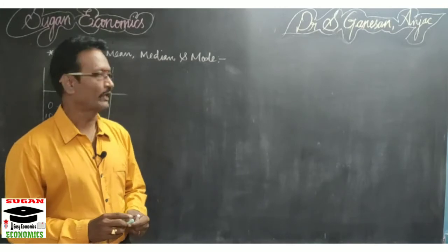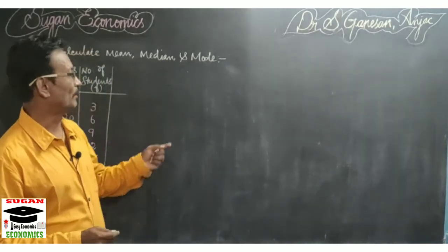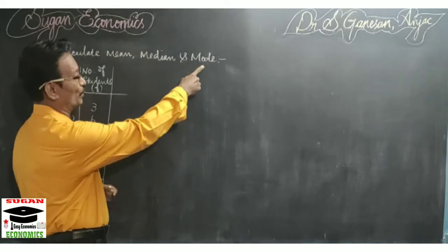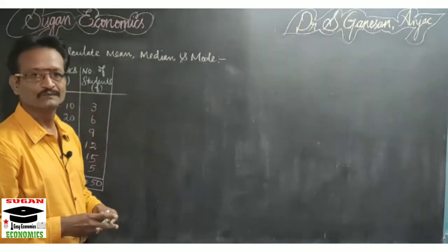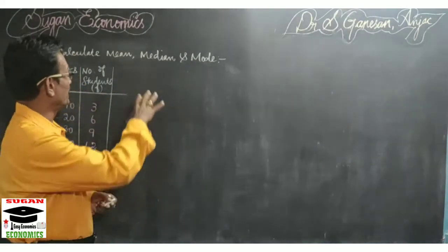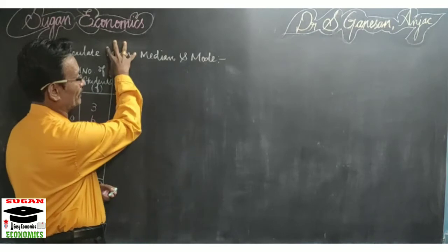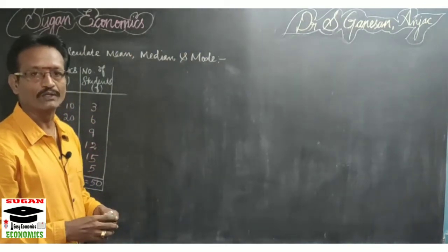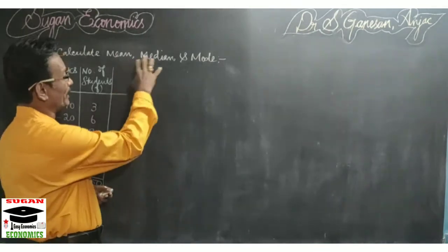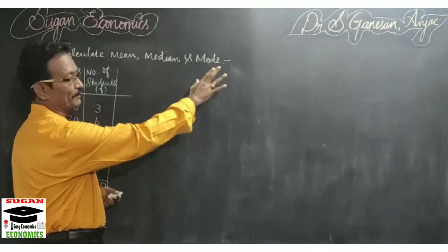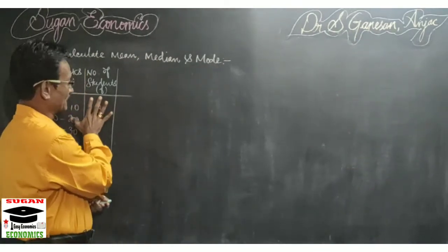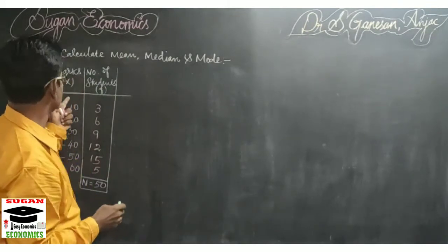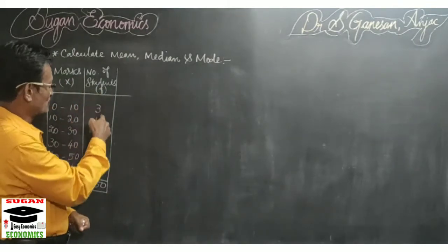Today I am going to explain how to calculate mean, median and mode for the given series. Previously we have calculated mean separately, median separately and mode separately. But now we are going to calculate mean, median and mode simultaneously with the help of an example. Here the sum is given: marks and number of students.